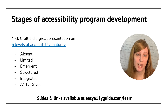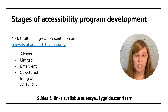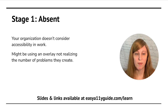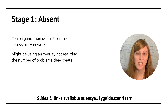Not every agency is going to go through all six levels. Some may decide that level four or level five is sufficient and will continue to keep the rest of it outsourced. Whereas other agencies will decide to do all six levels themselves over the years as they develop and increase their abilities in-house. The first stage is absent — this means your organization doesn't consider accessibility when it does, well, anything.